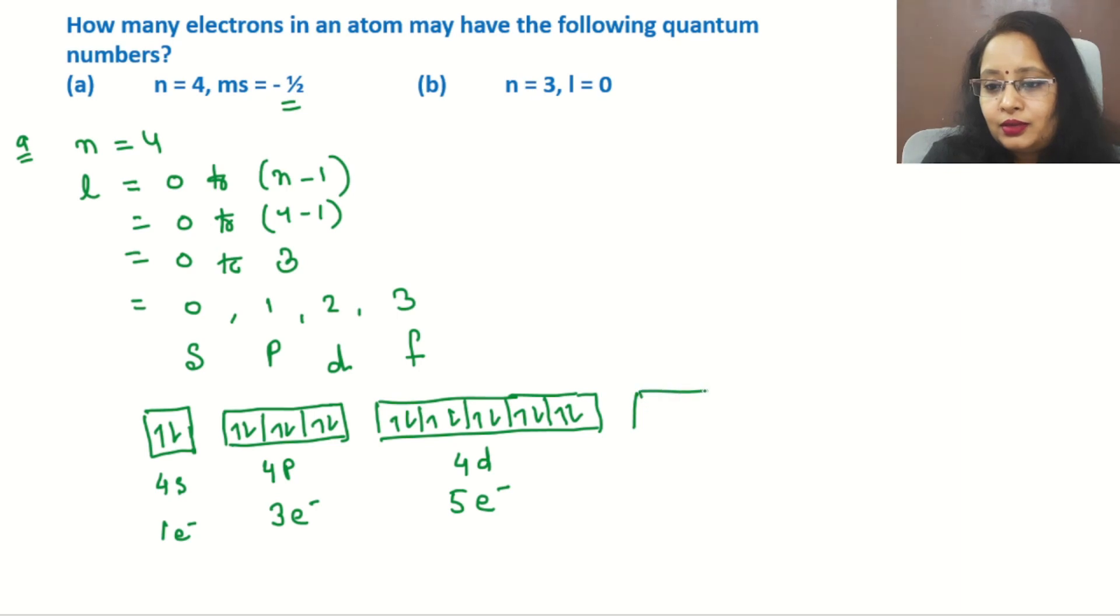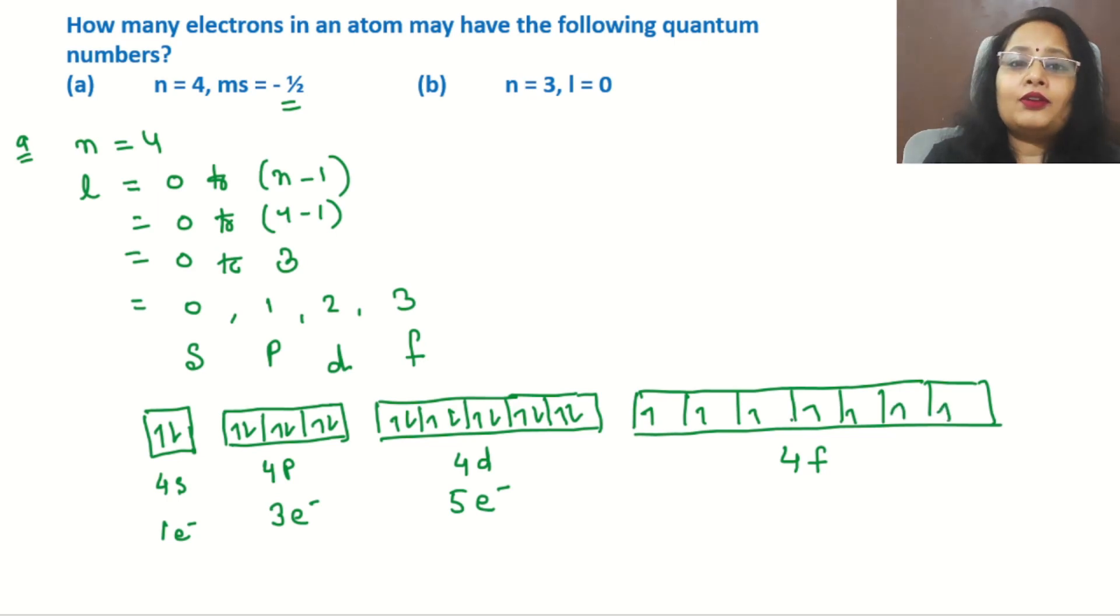Now for L=3, which means f. F has 7 orbitals. This is the 4f subshell. Seven electrons have positive spins, and 1, 2, 3, 4, 5, 6, 7 electrons have negative spin. So we need to find 7 electrons having negative spin.